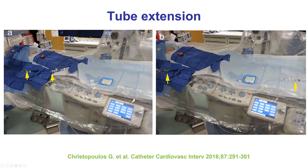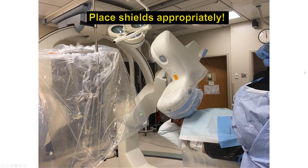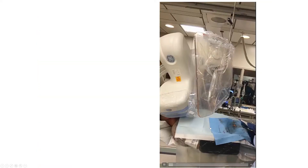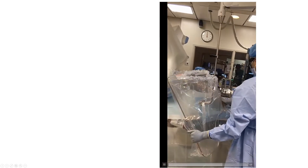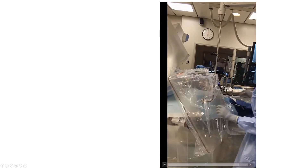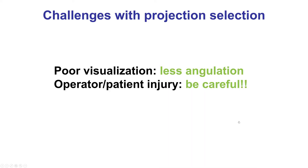When it comes to the operator, it is important to move the operator as far back as possible. One way to do this is to use an extension of tubing so that the manifold can be further back on the table. Also, the shield should be placed appropriately. This shield is not doing anything here, being far away from the source. Instead, the shield should be placed right next to the patient, and we should not forget that the scatter comes right at the back of the patient, so the shield should be low in order to block the scatter radiation.